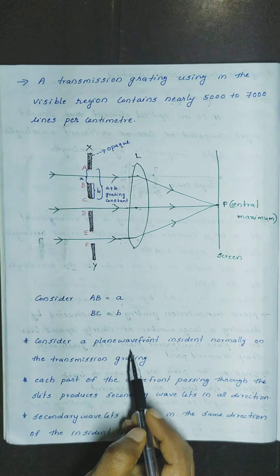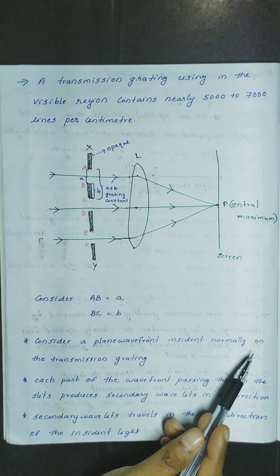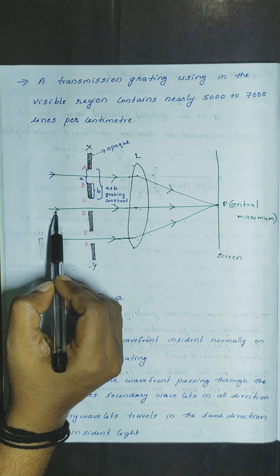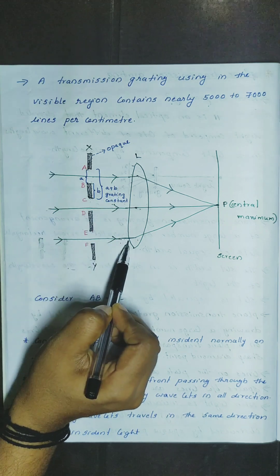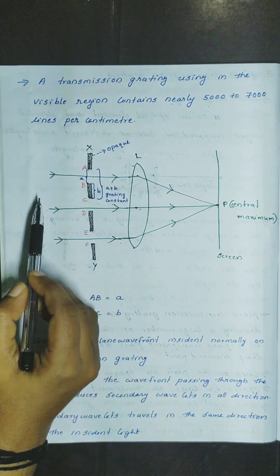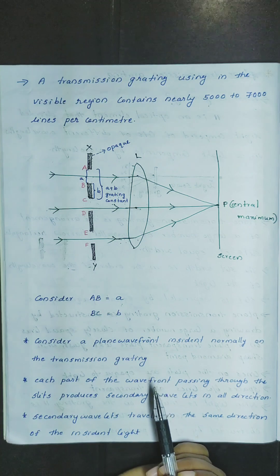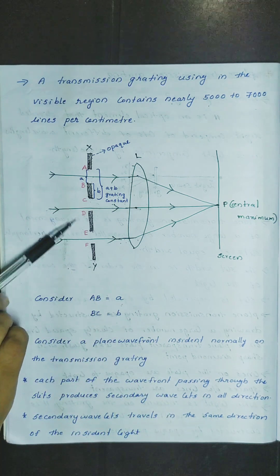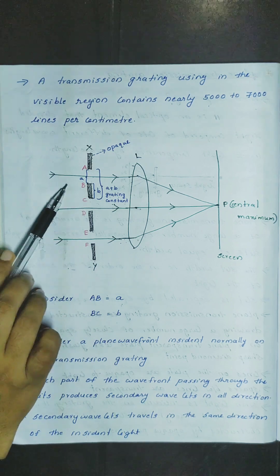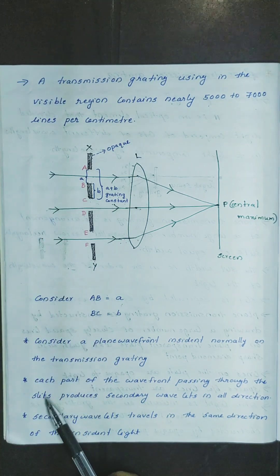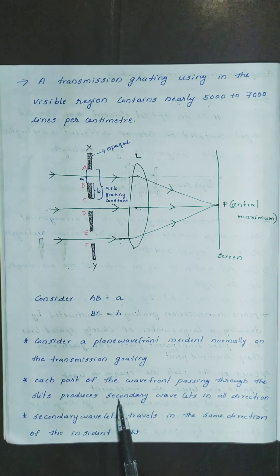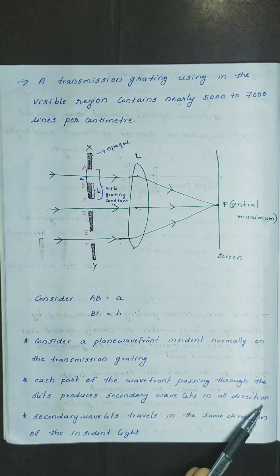Consider a plain wavefront incident normally on the transmission grating. Each part of the wavefront passing through the slit produces secondary wavelets in all directions.